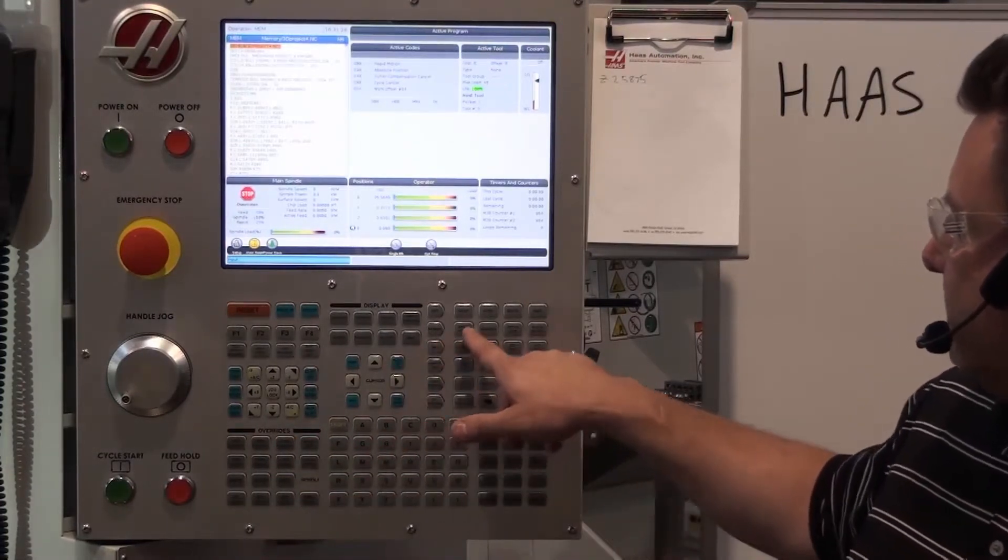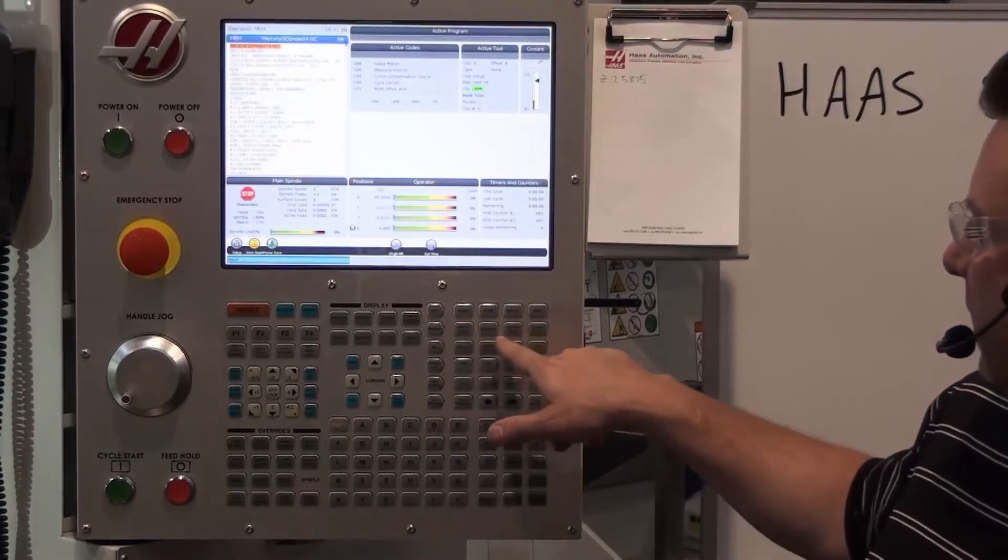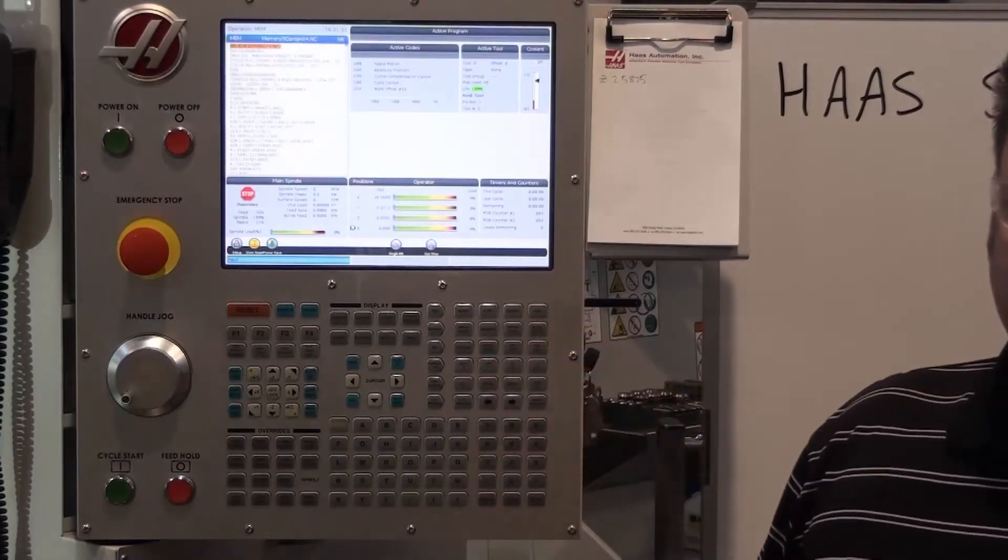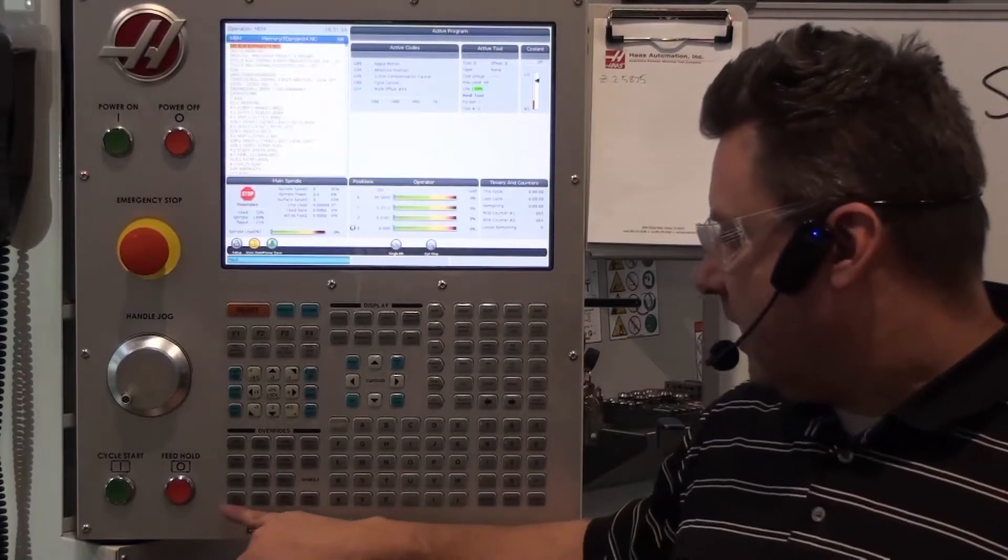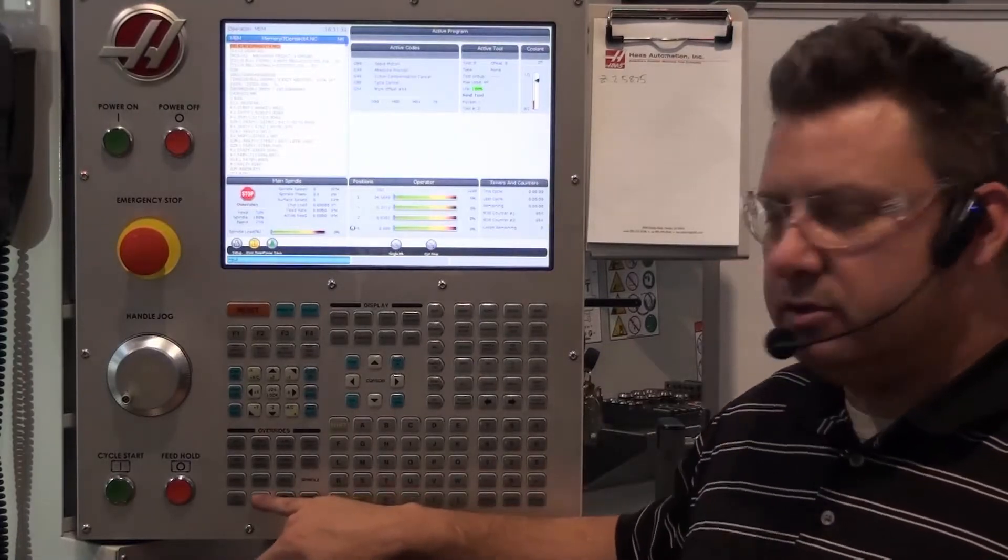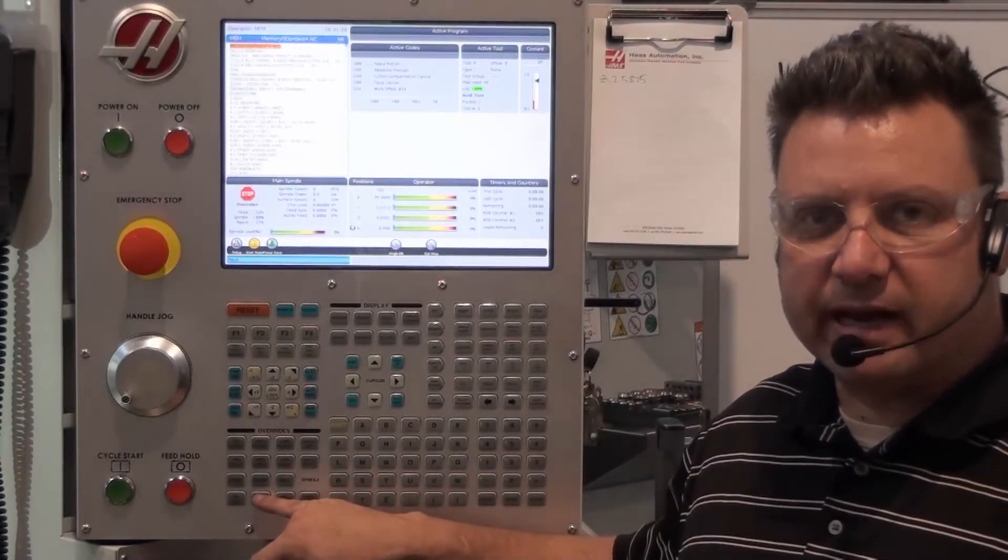The other two things that I like to do is I like to turn on the single block and I like to turn on optional stop. The reason for that is I bring my rapid down so that the machine doesn't move faster than I can react to it.